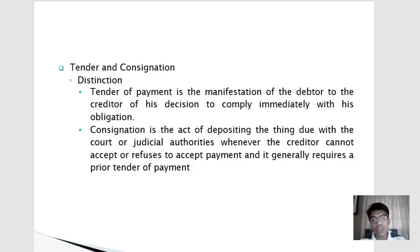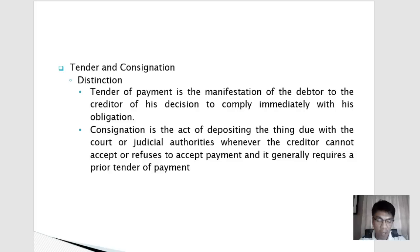The distinction between tender of payment and consignation is as follows: tender of payment is the manifestation by the debtor to the creditor of his decision to comply immediately with his obligation. Consignation is the act of depositing the thing due with the court or judicial authorities whenever the creditor cannot accept or refuses to accept payment, and it generally requires a prior tender of payment. Tender happens first before consignation — without prior tender, consignation may be premature or ineffective.